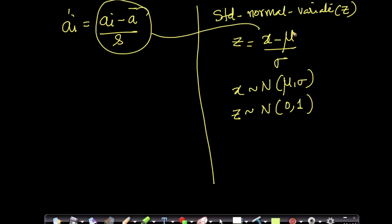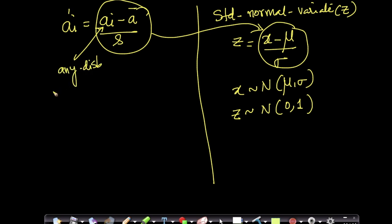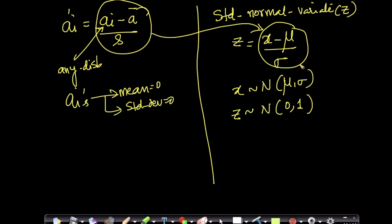This standardization formula looks very similar to the standard normal variate formula. Remember, the ai values can come from any distribution — it doesn't matter. It's called standardization because we're applying the idea from the standard normal variate to transform the data such that ai' has a mean of 0 and standard deviation of 1.